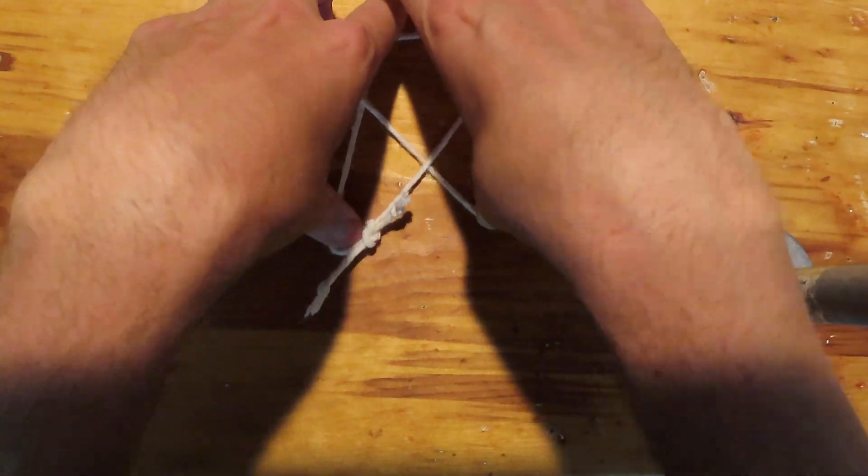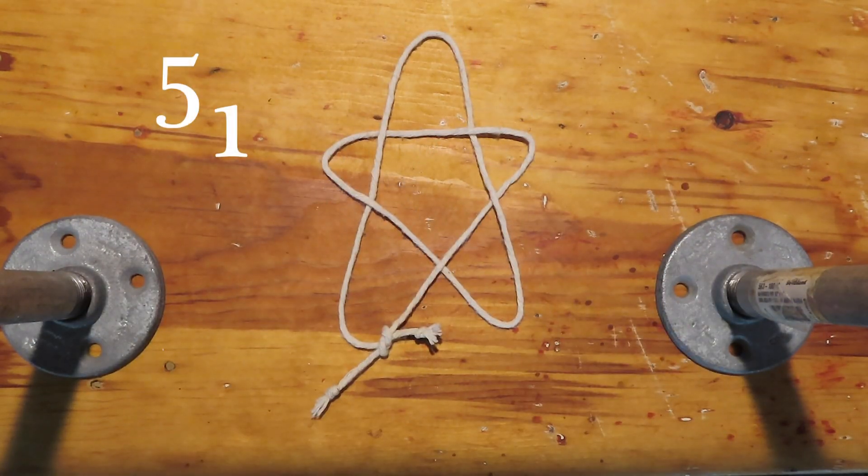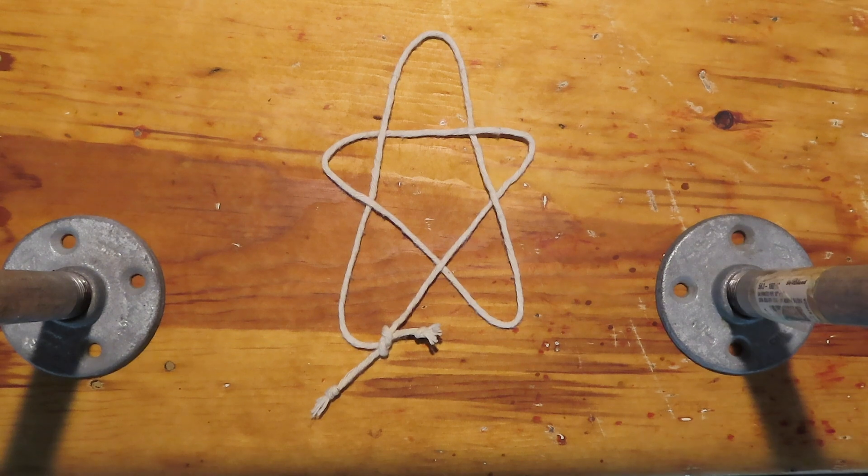Now, when we dress the knot for mathematics, something wonderful happens. We get a 5-pointed star. Of course, you can probably see an entire series of odd crossing knots now, just keep wrapping the overhand again, and again, and again. Aren't knots fun?